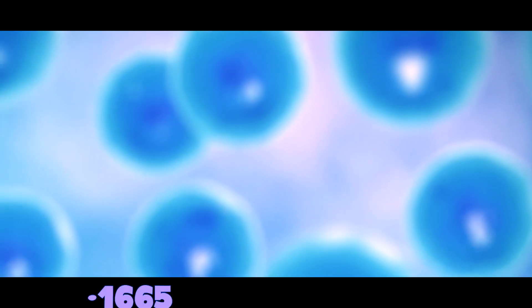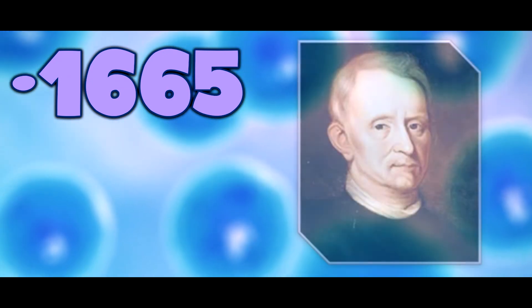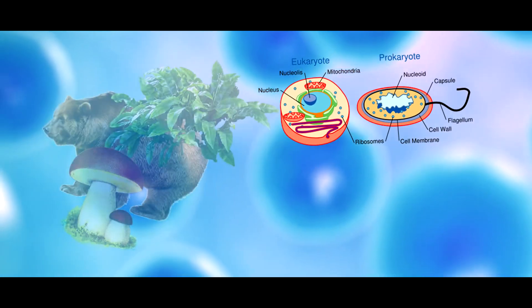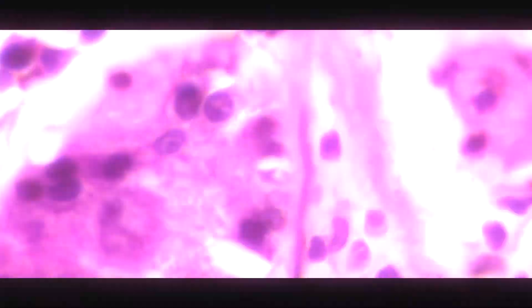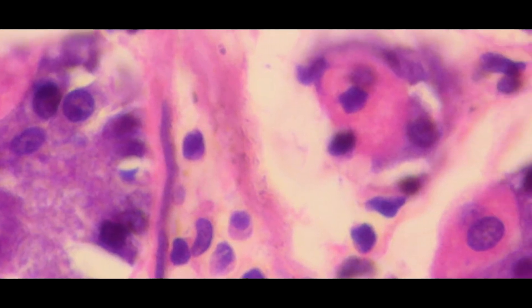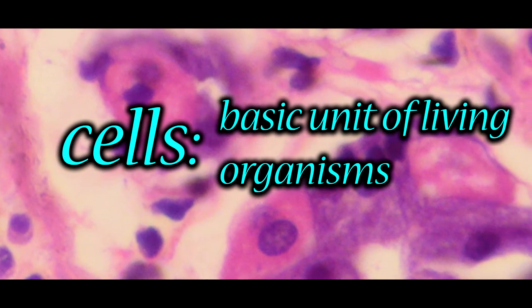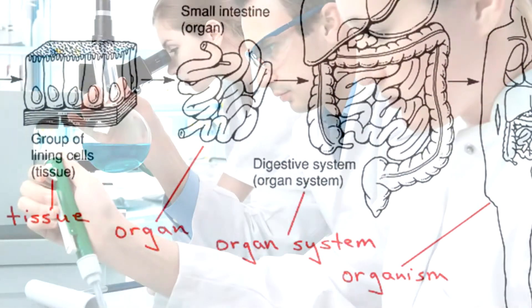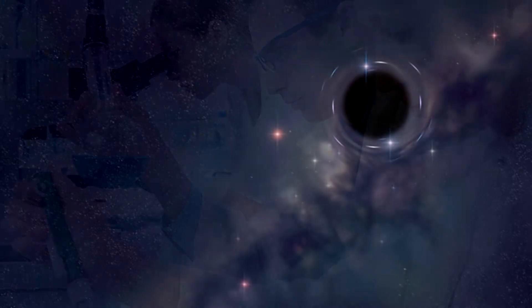Cell theory's main concepts didn't just pop into existence. It all dates back to around 1665, when an English physicist named Robert Hooke was the first to describe his observations of cells. His studies led to the idea that all biotic factors were composed of many fibers called cells. He basically proposed that cells were the basic unit of living organisms, and it was concluded that cells made up all living things.